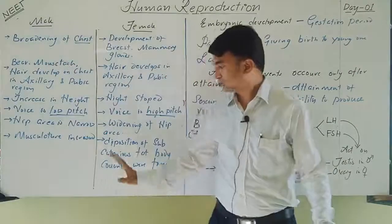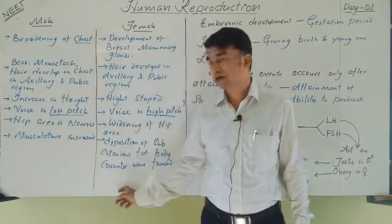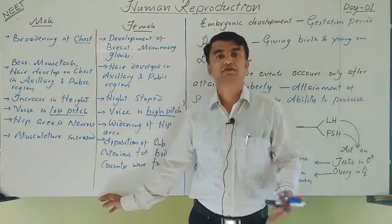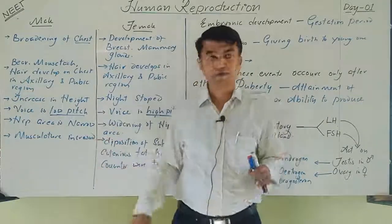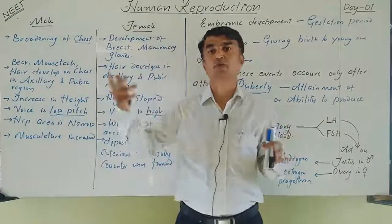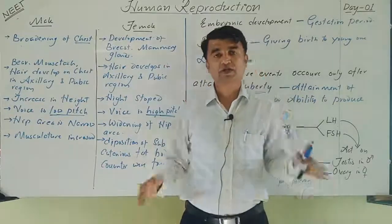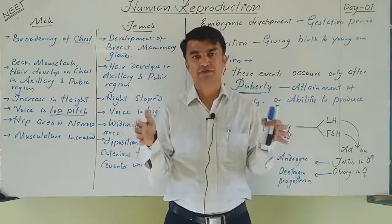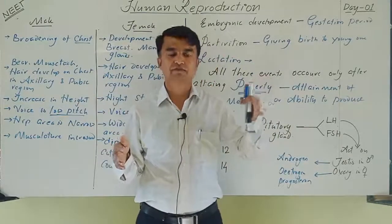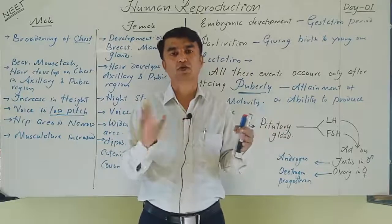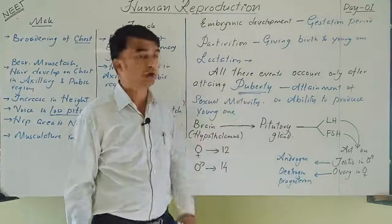A major difference: in males, gametogenesis occurs from puberty until old age, up to age 60–70. But in females, the reproductive phase is limited to the period between menarche (onset of menstrual cycle at puberty) and menopause (when menstrual cycles stop at around age 45–50). These are major differences between male and female sexual maturity.